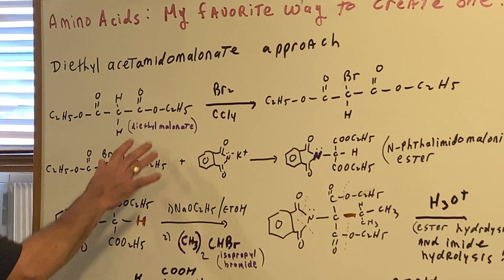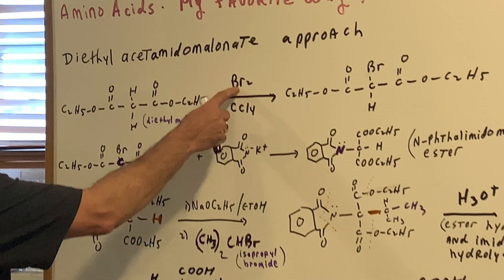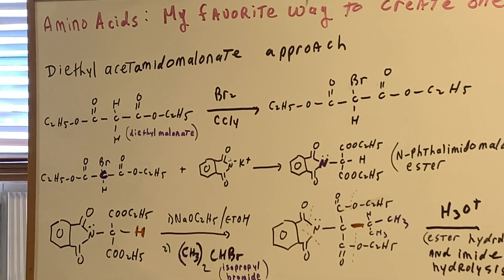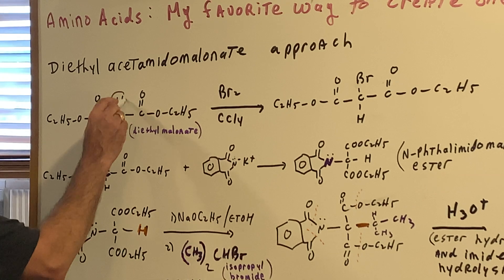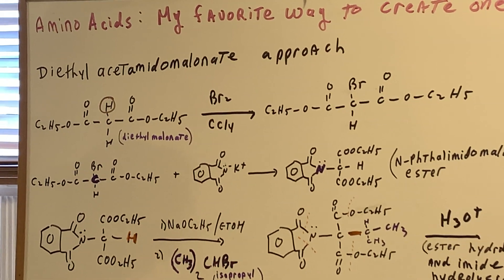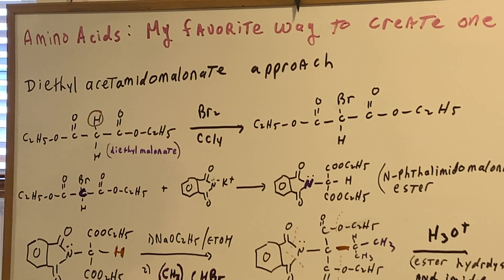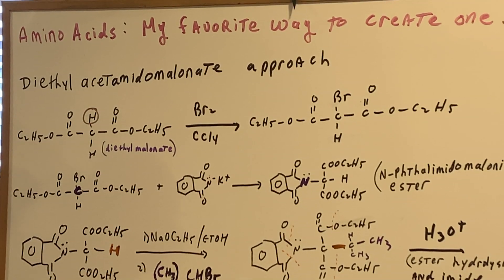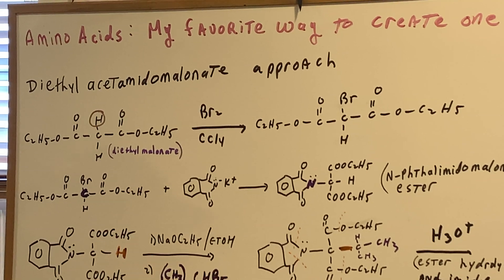All right, the first thing we're going to do is we're going to take diethyl malonate, and we're going to hit it with bromine and CCl4. All that's going to do is to remove one of the alpha hydrogens and get us set up for the main reagent. So all I did was I brominated the double alpha position. All right, and that's it. That's the hardest part.